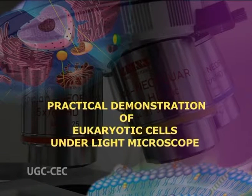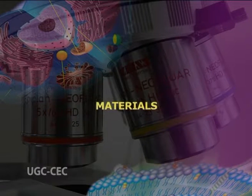Practical demonstration of eukaryotic cells under light microscope. Materials required: glass slide, blade, forceps, knife, water, iodine solution, droppers, cover slip, microscope, immersion oil, tissue paper, and onion.